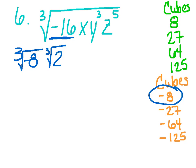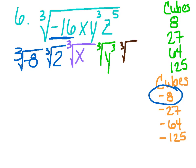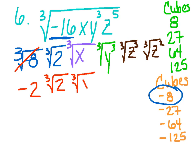Let's break our perfect cubes down. 16, I'm thinking, is going to be negative 8 and positive 2. So I'll say the cubed root of negative 8 and the cubed root of 2. They multiply to negative 16, and negative 8 is a perfect cube. For x with exponent 1 — that's less than 3 — all I can really do is write the cubed root of x. Y cubed is a perfect cube, so I rewrite that as the cubed root of y cubed. And lastly for z to the 5th, I break it into the cubed root of z cubed, and then I'm going to have 2 left over: the cubed root of z squared. These exponents total that 5 again.